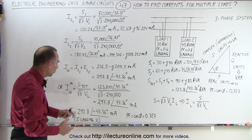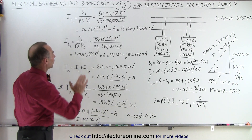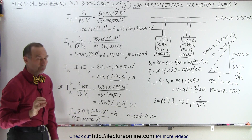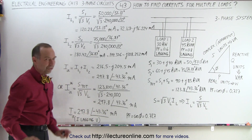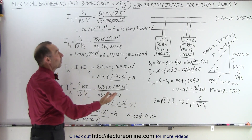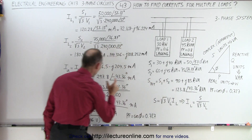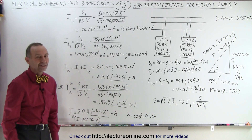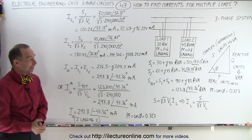So this is another way to find the total current due to multiple loads: either calculate each current individually and add them, or use the total power equation to get the total current as a complex conjugate and then adjust the phase angle. The reason both methods work is that power is also an algebraic sum. Be careful of that negative phase angle when converting from the complex conjugate to the actual current.